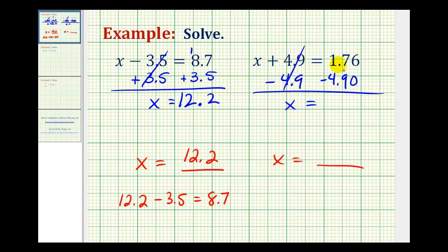But notice how this difference is going to be negative. If we think of this in terms of money, 1 dollar and 76 cents minus 4 dollars and 90 cents is going to result in a loss. So this will be negative.